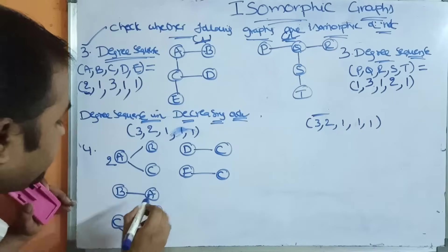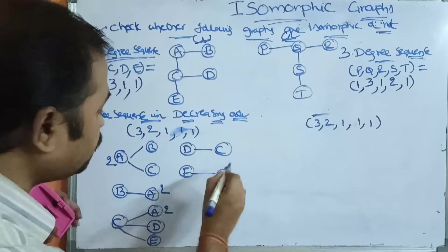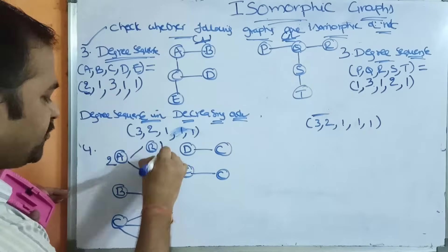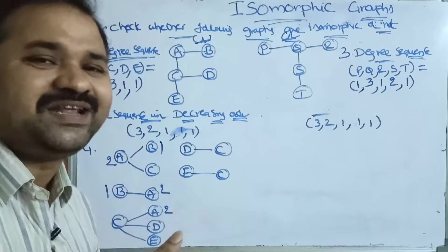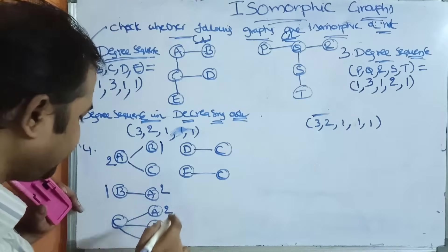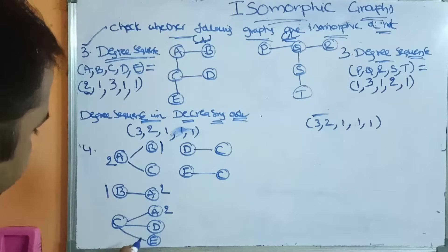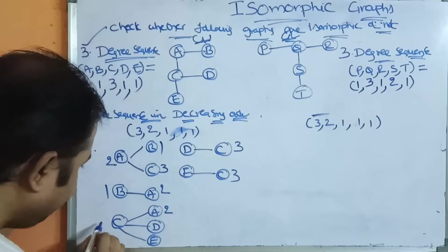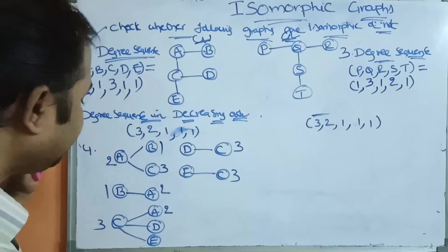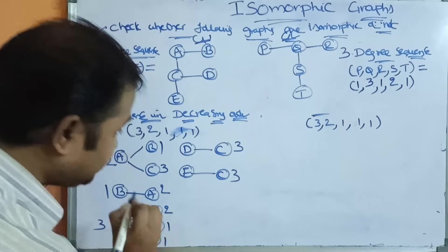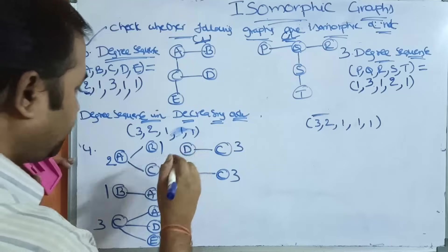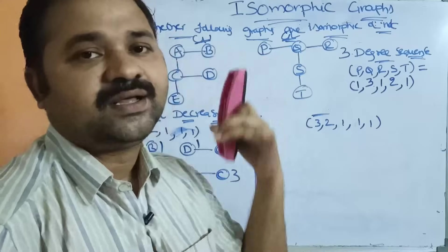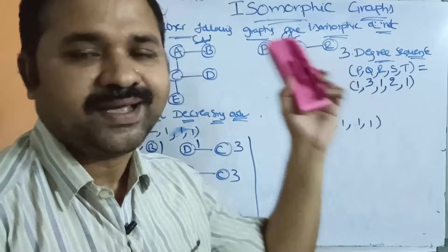Now let us substitute the degree values. Degree of A is 2, degree of B is 1, degree of C is 3, degree of D is 1, degree of E is 1. For graph two — P's adjacent node is Q. Q's adjacent nodes are P, R, S. R's adjacent node is Q. S's adjacent nodes are Q and T. T's adjacent node is S.